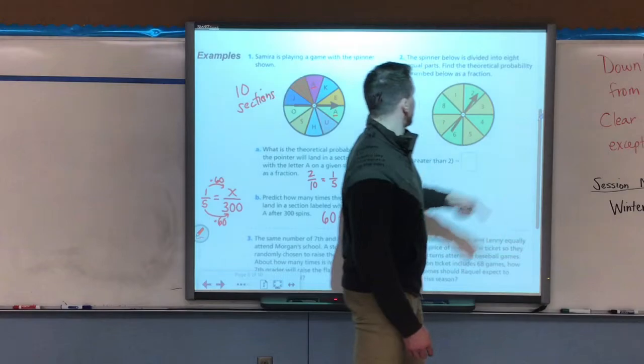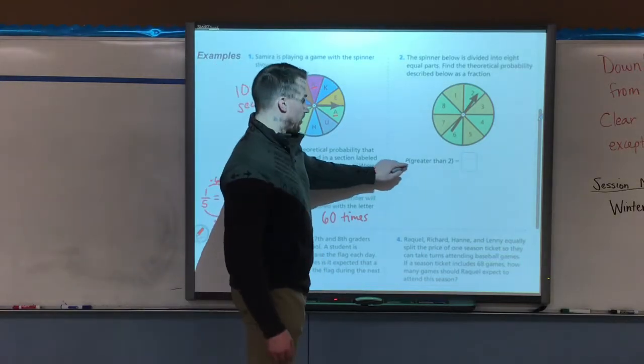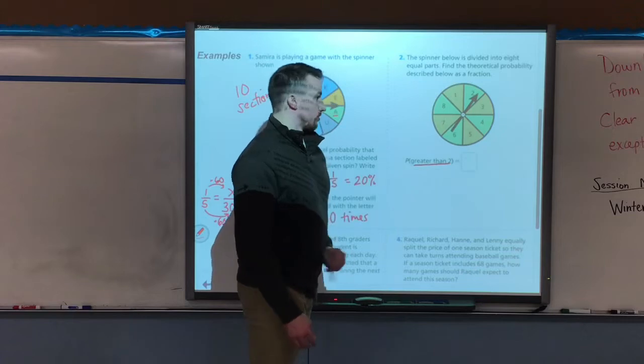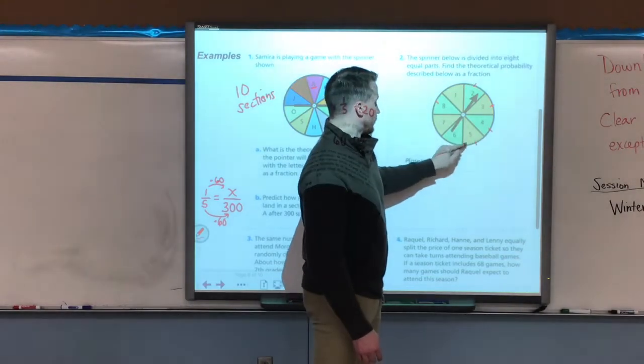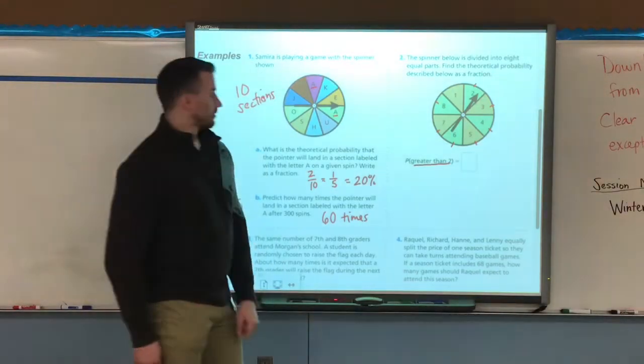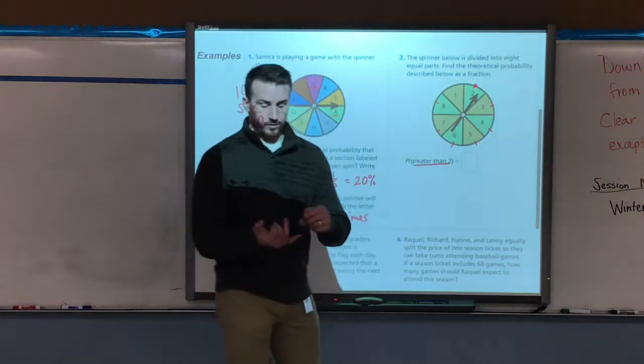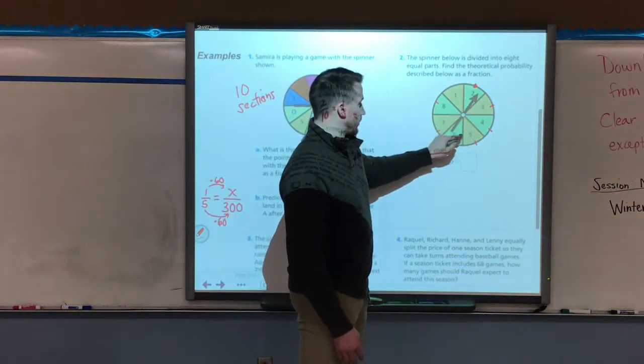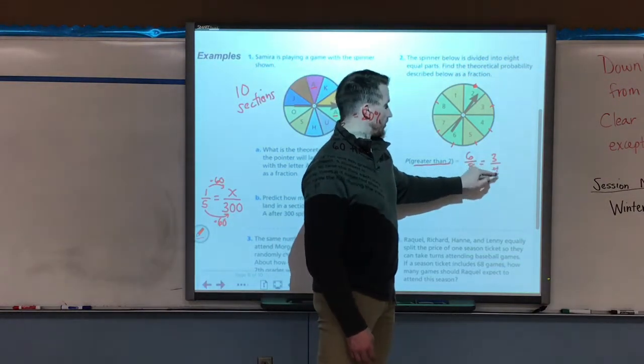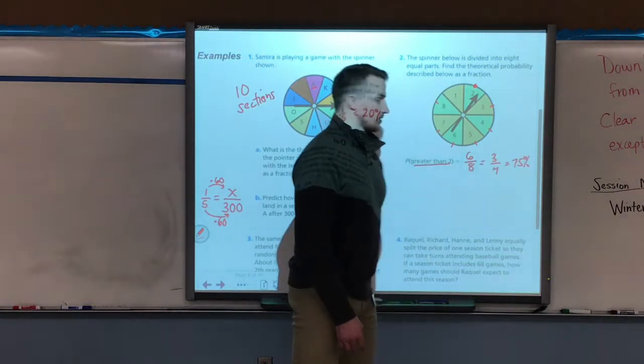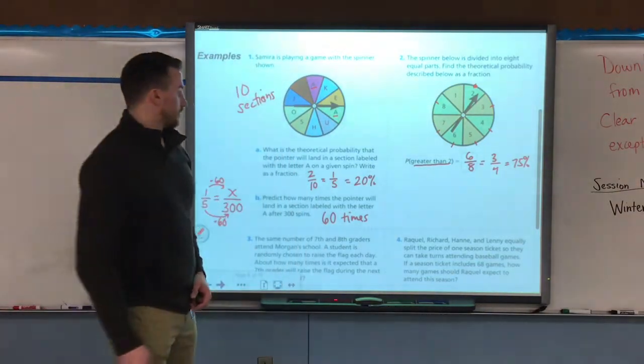Example two. The spinner below is divided into eight equal parts. Find the theoretical probability described below as a fraction. So now here's the example. The probability of a number greater than two, so two and above. So I'm going to look here and I'm going to put a little tick mark by all the ones that are greater than two. It says greater than two, so it does not include two. My fault. So greater than two, that would be three, four, five, six, seven, eight. So that's six out of the eight sections, which I can simplify to three-fourths, which is of course 75%. So if it's greater than two, that means it doesn't include two. If it had said two or higher, then we'd include two.